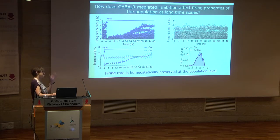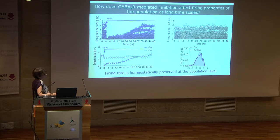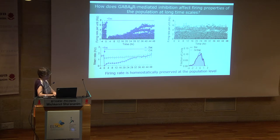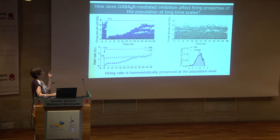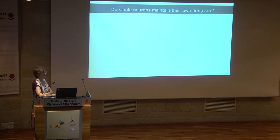We can conclude that firing rate is preserved at the level of population. A year ago a paper in Neuron from Turrigiano's group showed very similar data in vivo for monocular deprivation. The second question we then asked was: do we have the same kind of stability — renormalization — at the level of individual neurons?